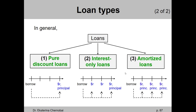The most common type of loans — at least consumer loans like car loans and home loans that people like us will probably deal with at some point in our life — are known as amortized loans or amortizing loans. This is the most complicated type of the three. That's when each time you make a payment back to the lender, you are paying an interest amount and part of the principal. The fact that you're paying principal regularly means that the amount you owe to the lender goes down with each payment. Now let's see how each of these works.